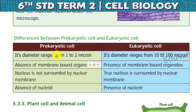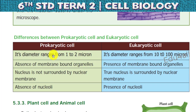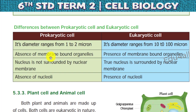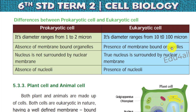Now we can see the difference between prokaryotic cells and eukaryotic cells. The diameter of prokaryotic cells is 1 to 2 micrometers, but eukaryotic cell diameter ranges from 10 to 100 micrometers. Prokaryotic cells have an absence of membrane-bound cell organelles like mitochondria and chloroplast, while eukaryotic cells have membrane-bound cell organelles.